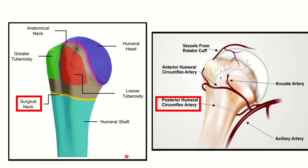Now let's see the surgical neck. In this picture we can see the upper end of the humerus. Here is the humeral head, and we can see this tracing — this is the anatomical neck. Here we can see the lesser tuberosity and greater tuberosity, and here we can see the surgical neck and the humeral shaft. We have to find out the vessel which lies at this line.